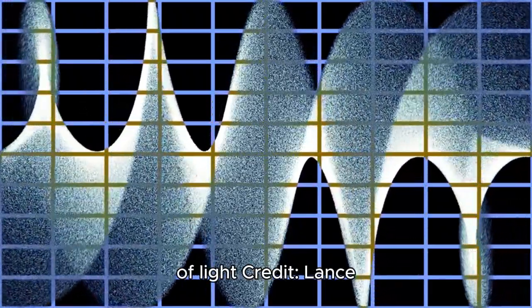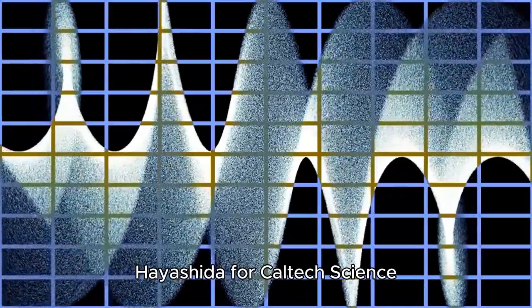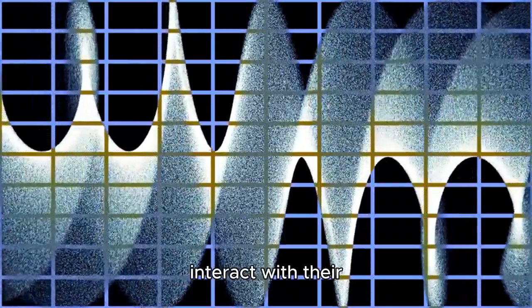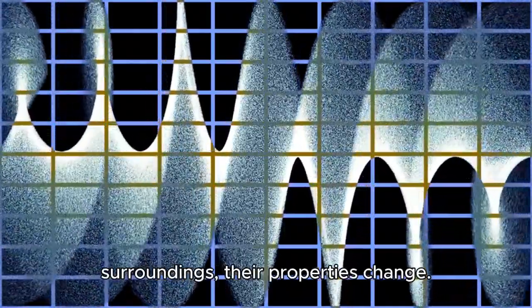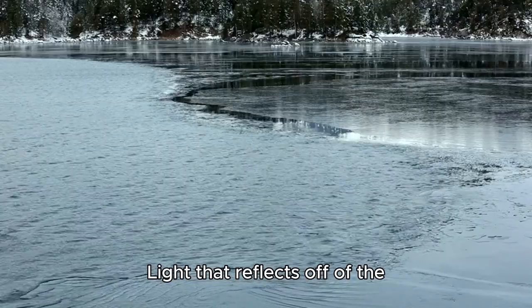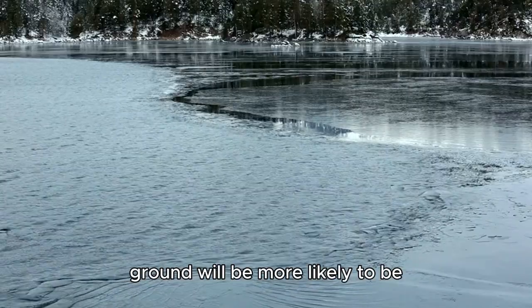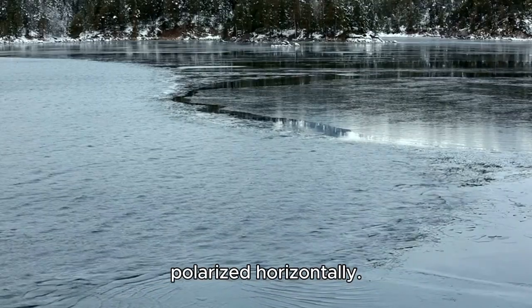Credit: Lance Hayashita for Caltech Science Exchange. Light waves interact with their surroundings. Their properties change. Light that reflects off the surface of a lake or snow-covered ground will be more likely to be polarized horizontally.